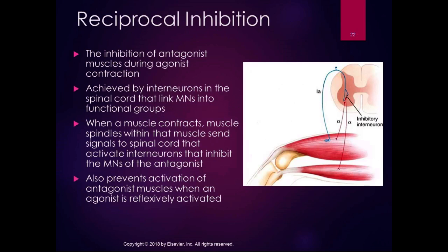Reciprocal inhibition is the inhibition of antagonist muscles during agonist contractions, and it's achieved by interneurons in the spinal cord that link motor neurons into functional groups. When a muscle contracts, the muscle spindles within that muscle send signals into the spinal cord that activate interneurons that inhibit the motor neurons of the antagonist.